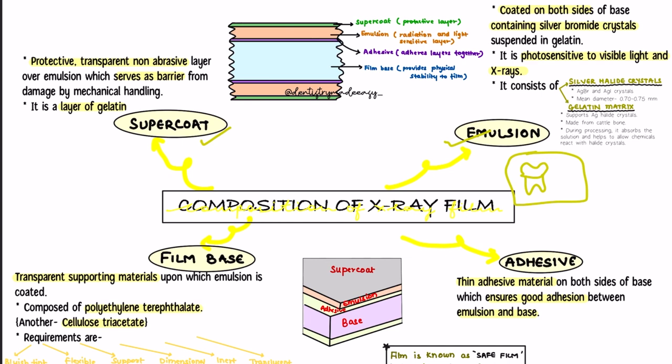The first layer seen on the film is known as the supercoat — the outermost layer of the film. It is nothing but a protective layer. The supercoat is a protective, transparent, non-abrasive layer which is present over the emulsion.